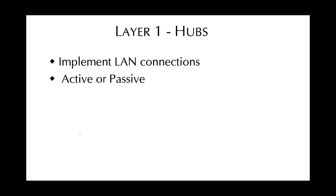Hubs are devices that implement the connection between end devices and a LAN, operating at the physical layer. Small passive hubs typically with four ports take a signal arriving on one port and replicate it to all other ports without any other processing. Active hubs with their own power supplies also function as repeaters, regenerating the signal before forwarding it to other ports.